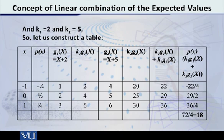So what do we get? 5 into 4, that is equal to 20. 5 into 5 is equal to 25. 5 into 6 is equal to 30. So 20, 25 and 30, these are the values of k2 into g2(x). Earlier 4, 5, 6, they were the values of g1(x).